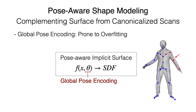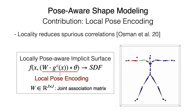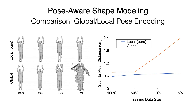For example, when we model pose-dependent deformations around the arm, the leg joints are less likely correlated, which only introduces spurious correlation during training. Therefore, we localize pose encoding by leveraging the learned skinning weights. Our local pose encoding demonstrates significantly better generalization even with very limited training data.